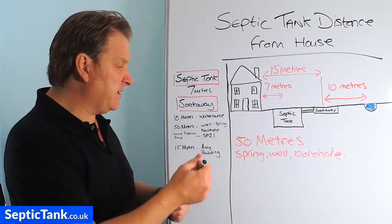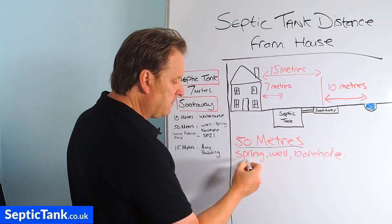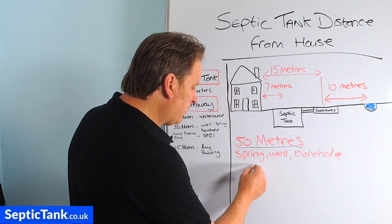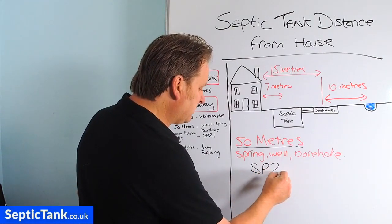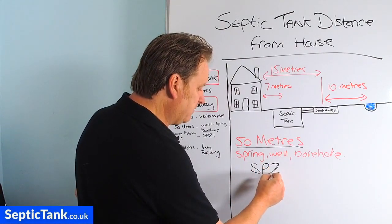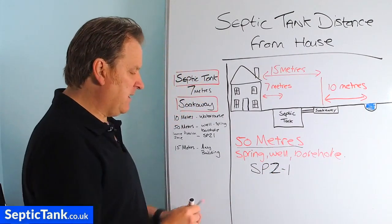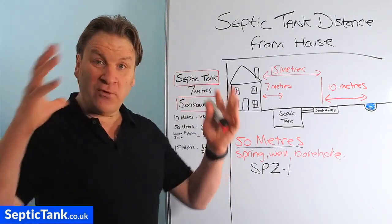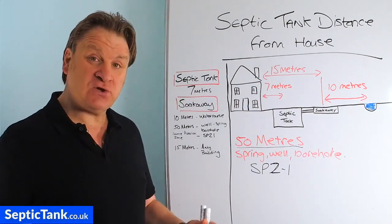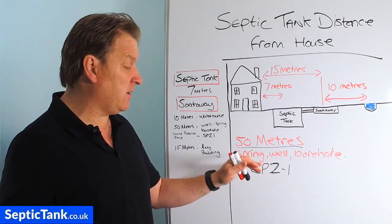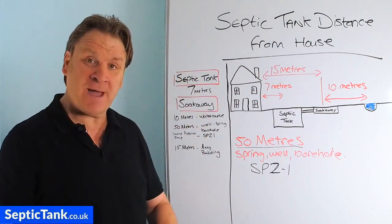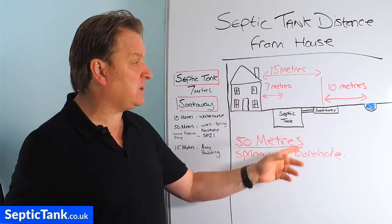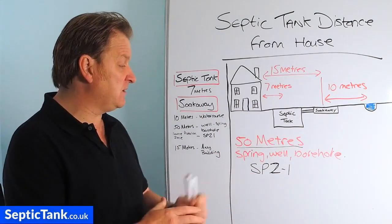Going a little bit deeper on this — when you start dealing with springs, wells, boreholes, there are wildlife protection zones called SPZ — that's an S-P-Z, not a 2 — Z1 areas, which stands for Source Protection Zone. The government has drawn up a map of the whole of the UK showing where all these sensitive protection zones are for springs, wells and boreholes. You can find this government map on Google, put your postcode in, and it will tell you how far away you are from any of these sources.